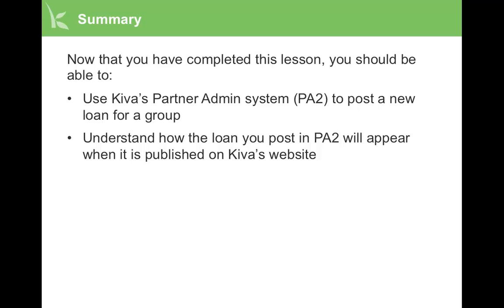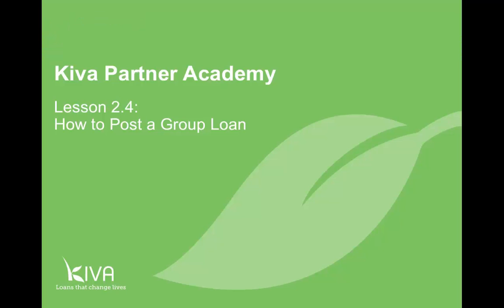Now that you have completed this lesson, you should be able to use Kiva's Partner Admin System, PA2, to post a new loan for a group, and understand how the loan you post in PA2 will appear when it is published on Kiva's website. Thank you for completing this lesson of the Kiva Partner Academy. We hope to see you again soon!